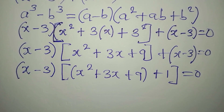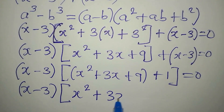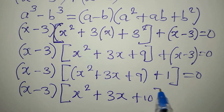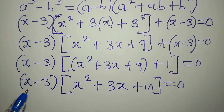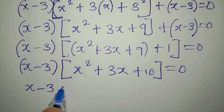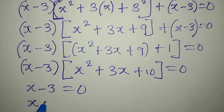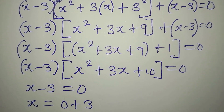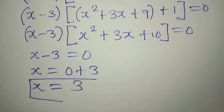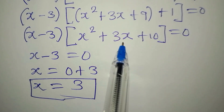Continuing, x minus 3 remains a factor, and inside we have x squared plus 3x, then 9 plus 1 gives 10. So we have x minus 3 times x squared plus 3x plus 10, all equal to zero. We are multiplying two terms to get zero, so either x minus 3 equals zero, giving us x equals 3. This is the real solution to the problem.